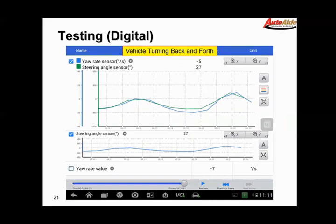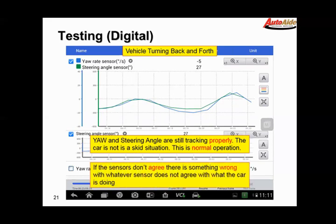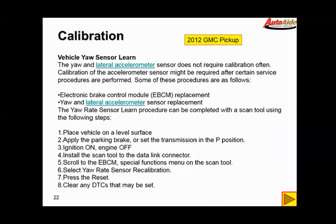And then as we turn the car back and forth—not drastic turns, but sort of gentle rolling turns, that kind of stuff where the car is not getting out of line—you can see how the yaw sensor and the steering angle sensor sort of track each other. Again, you're looking at a good sensor here. However, if you were turning the steering wheel and the yaw sensor was going crazy and you knew physically you weren't doing that, then it would be time to replace the yaw sensor. If the sensors don't agree, there's something wrong with whatever sensor does not agree with what the car is doing. You know what you're doing to the car—accelerating, decelerating, turning hard, whatever—the sensor should reflect that.